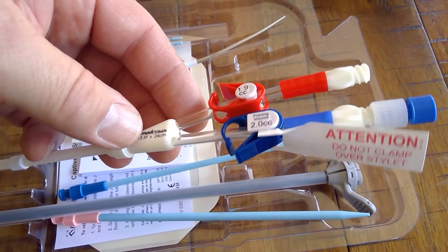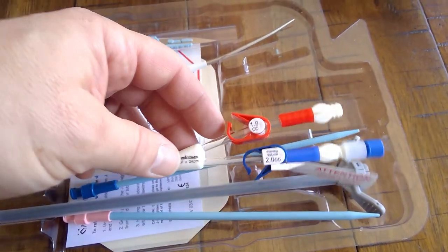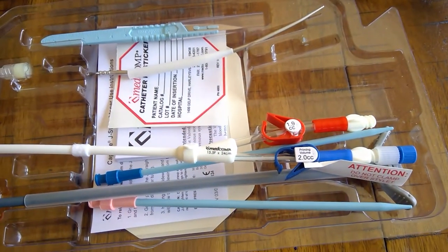That is only for exchanges. If you're doing a fresh placement you'll just remove the stylet, flush and lock both lumens, and insert this catheter through the peel away sheath.